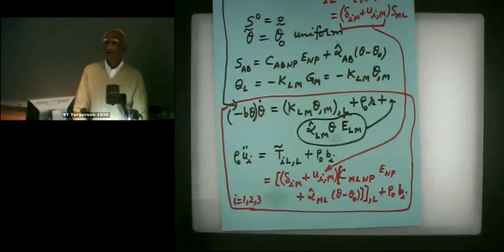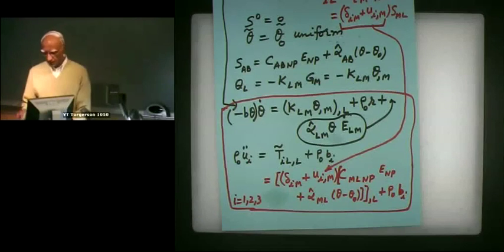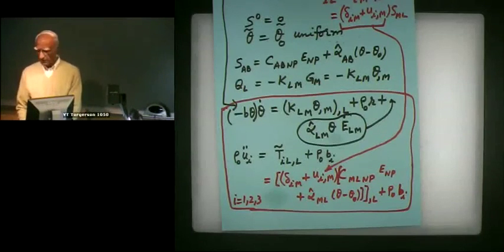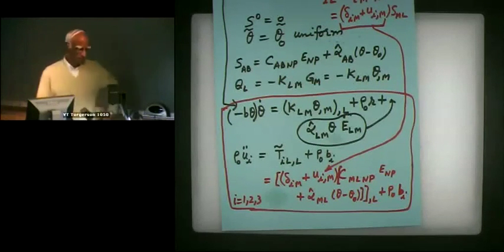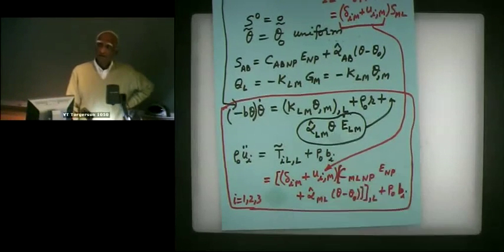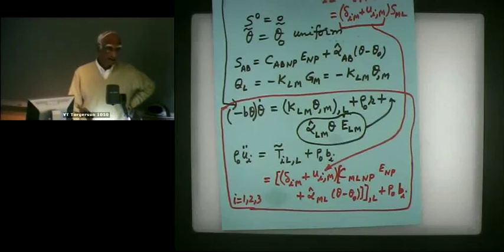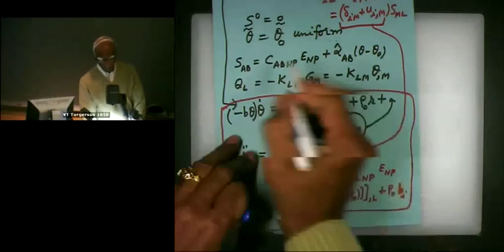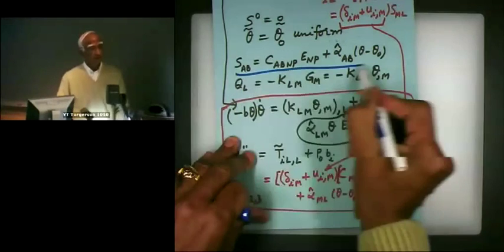These are four equations, as somebody from Wake Forest said last night. These are four equations and four unknowns: temperature and the three components of displacement. So if we make the additional assumption — this assumption is based on the fact that stress is a linear function of strain E and the temperature change, and the temperature gradient change.